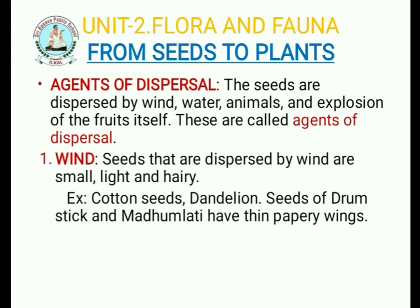Examples of seeds dispersed by wind are cotton seeds, dandelion seeds, seeds of drumstick, and madhu malati. These are dispersed by wind. Also, they have thin papery wings. By these wings they can fly in the wind and fall somewhere. So wind is one of the dispersal agents.